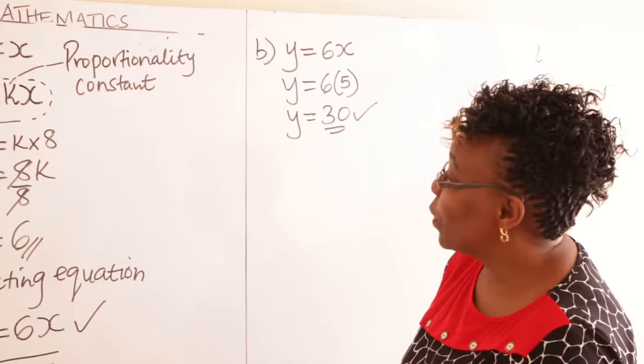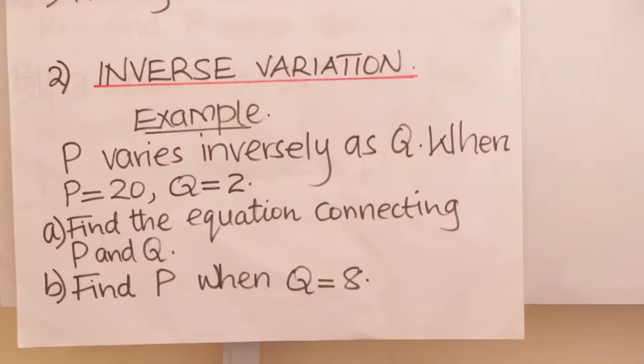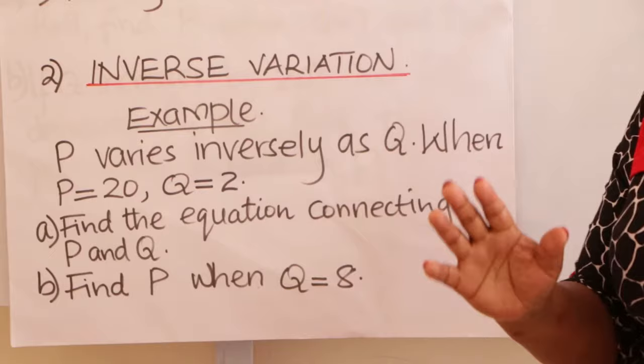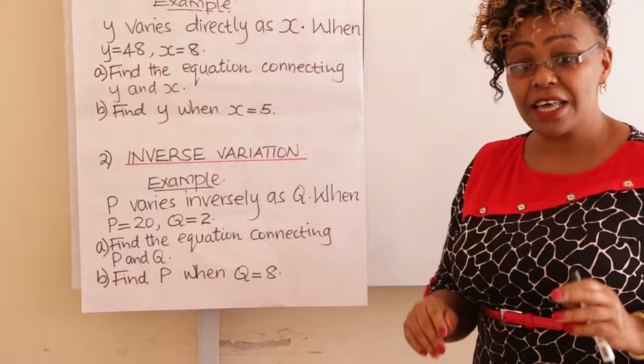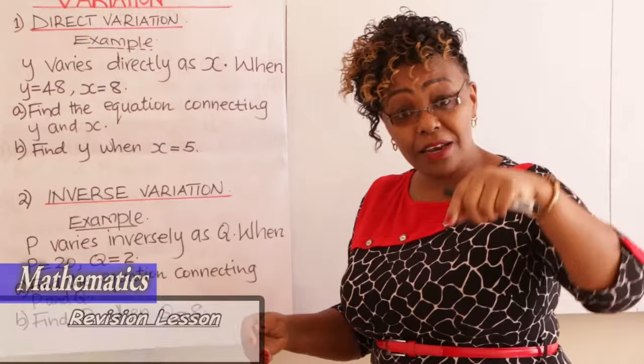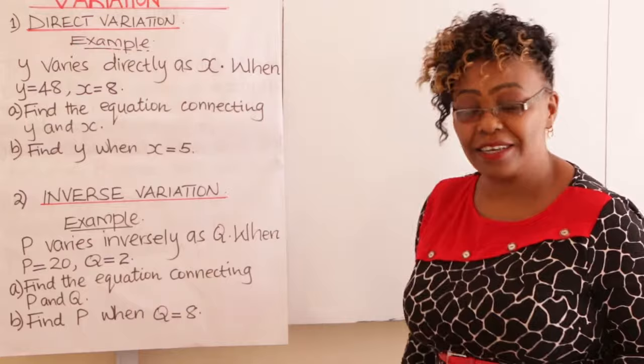We go to the next type of variation. The second type is called inverse variation. When we say that two quantities are varying inversely, we mean that when one quantity is increasing, the other one is decreasing — but at the same rate. Or vice versa: when one decreases, the other one increases at the same rate.